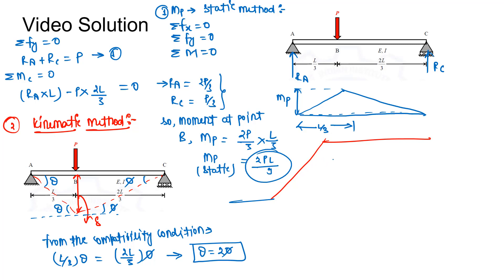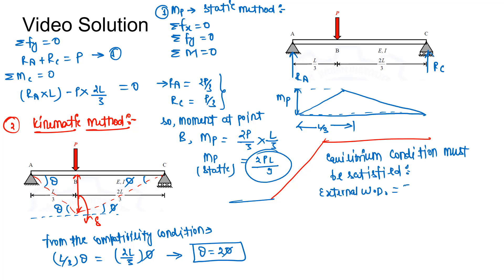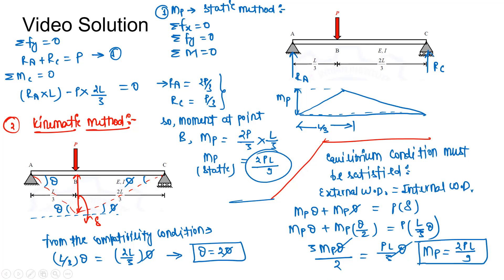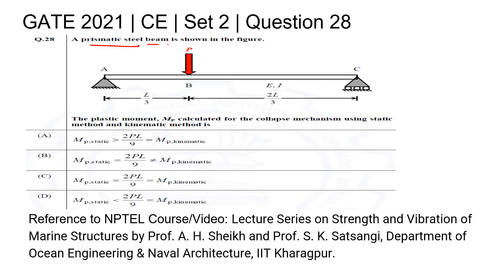The equilibrium condition requires external work done equals internal work done: mp × theta + mp × phi = P × delta. Substituting theta = 2 phi and delta = (L/3) × theta: (3/2) mp × theta = (PL/3) × theta. Solving gives mp = 2PL/9, which is our mp kinematic.